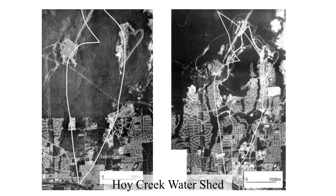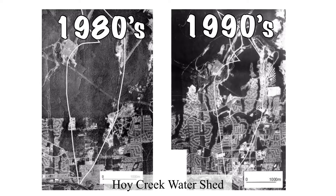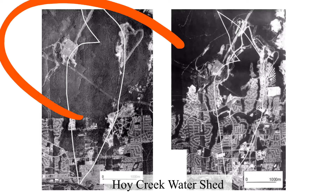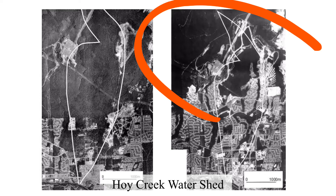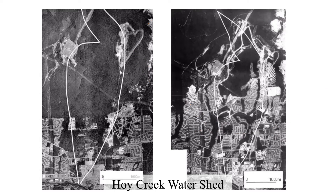We're going to start here. What we see here are two photographs of the Hoy Creek watershed in Coquitlam — one from the 1980s and one from the 1990s. The one on the left shows a lot more forested land. And in the one on the right, urbanization has moved into those forested areas, broken them down, fragmented them, and removed some of them. So this is having an ecological effect.